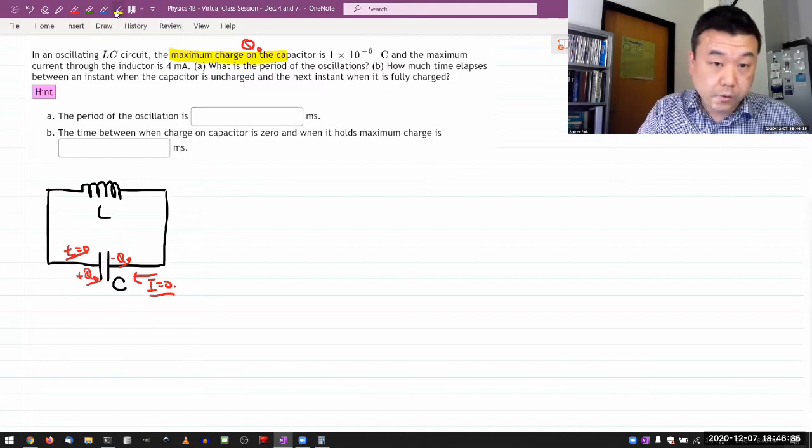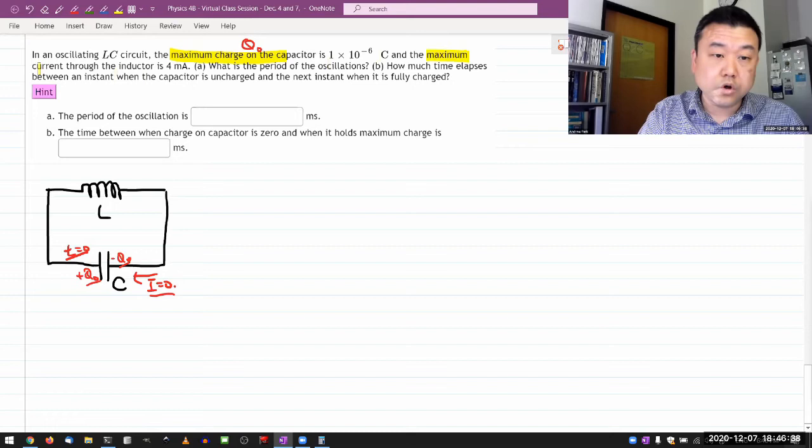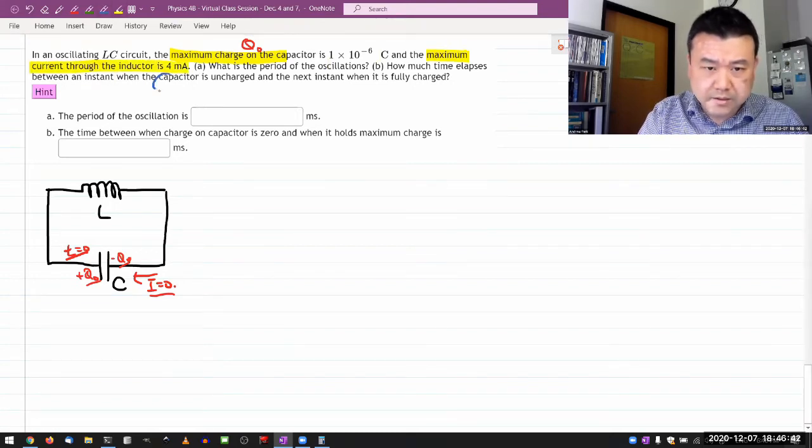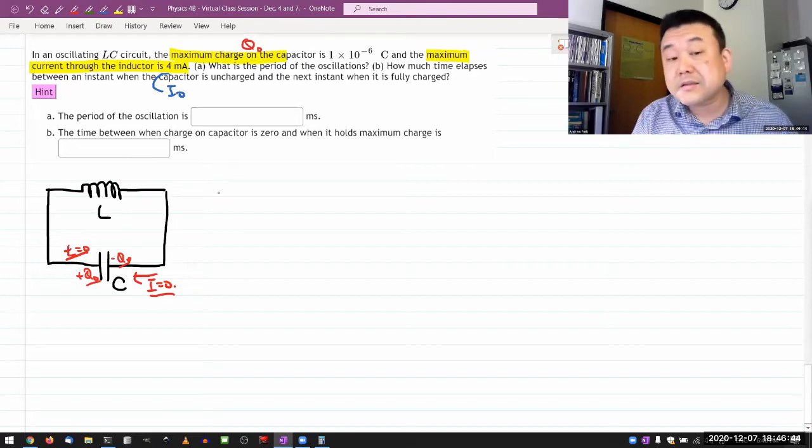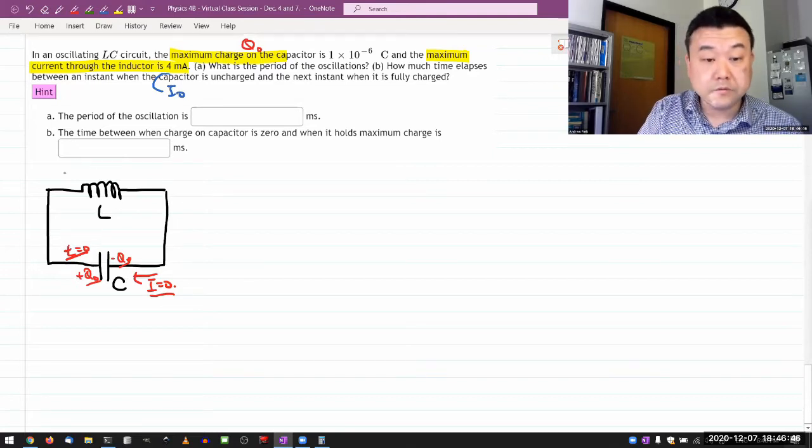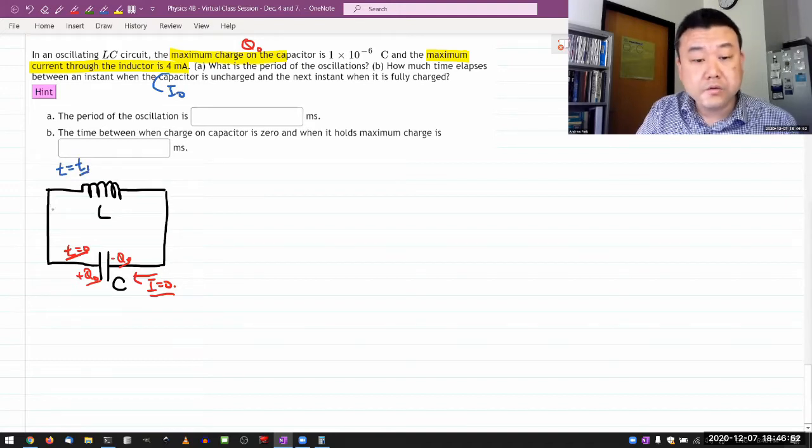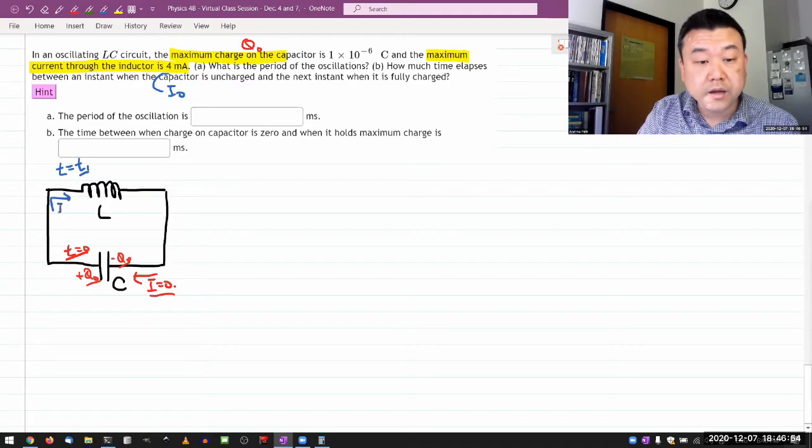And then the question is giving me the maximum current through the inductor. Let me color code this and label this as I naught. And this is going to be at some different time. So let me say at some time T1, this is a moment in time when you have the maximum current I is equal to I naught flowing through the inductor.